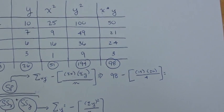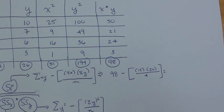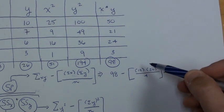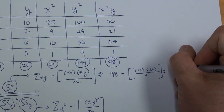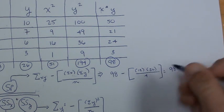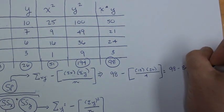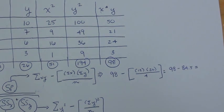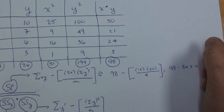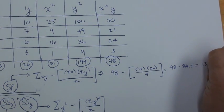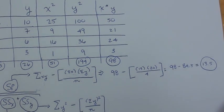So, if we go to our calculator now, we want 13 times 26, that gives you 338 divided by four. So, within the bracket, you have a value of 84.5. So, 98 minus 84.5 is going to give you the sum of the products. Let's see what we do, 98, 84.5, SP in your formula equals 13.5.